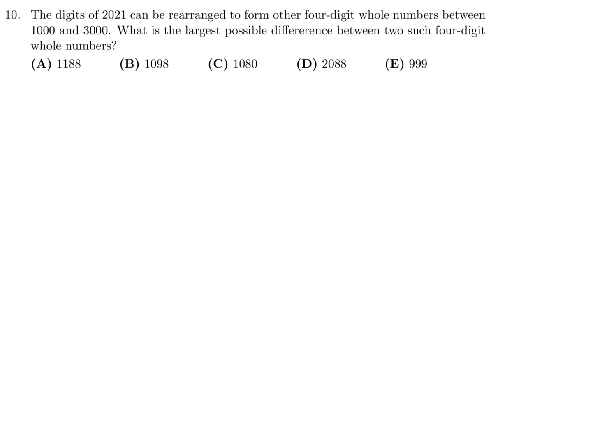The digits of 2, 0, 2, 1 can be rearranged to form other four-digit whole numbers between 1,000 and 3,000. What is the largest possible difference between two such four-digit whole numbers? We have to create the largest possible four-digit number and the smallest possible four-digit number using 2, 0, 2, 1. For the largest one, I'll put the 2 there, try to make it as big as possible. The next biggest is 2. The next biggest is 1. And then the only number remaining is 0. So this is the largest that I can make, 2210.